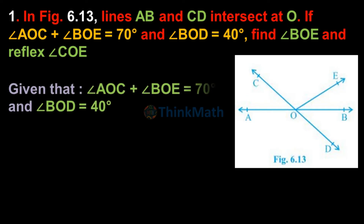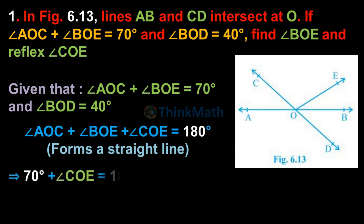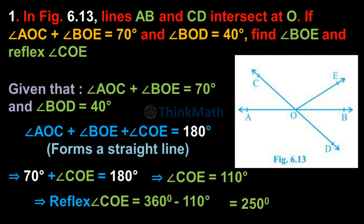Given: angle AOC plus angle BOE is equal to 70°, and angle BOD equal to 40°. Since angle AOC plus angle BOE plus angle COE equal to 180° (forms a straight line), 70° plus angle COE equal to 180°, which gives angle COE equal to 110°. Therefore reflex angle COE equal to 360° minus 110° equal to 250°.